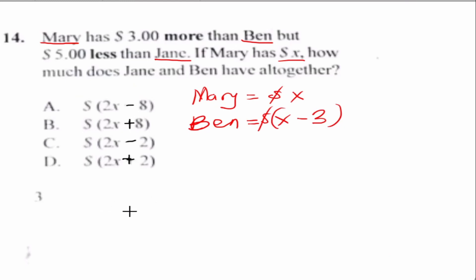So Ben's share is Mary's share minus 3 because Mary has $3 more, meaning when we take that $3 out of Mary's share, it will give us Ben's share. Now let's get to the second part, which is "but $5 less than Jane." It means that Mary's share here, x, is $5 less than Jane's.